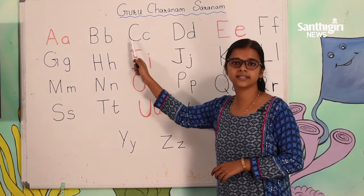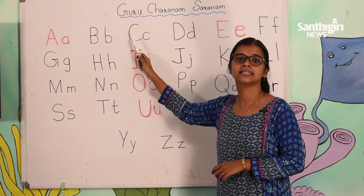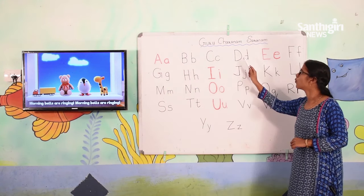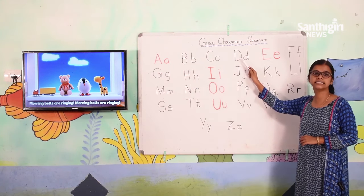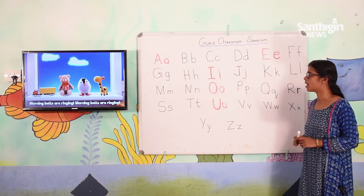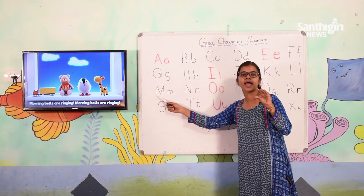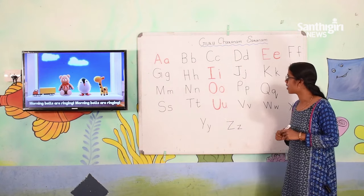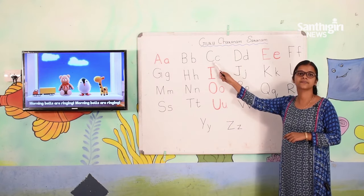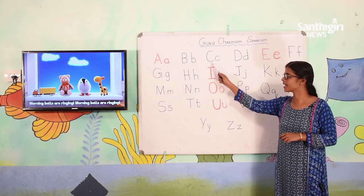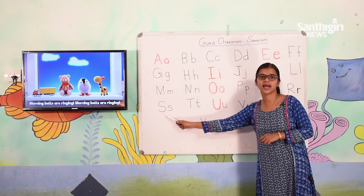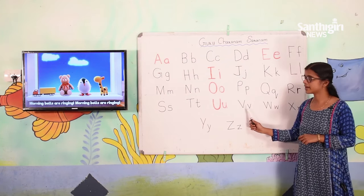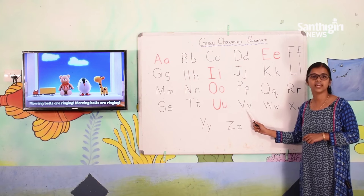So what letter is this? Z. What letter is this? B. What letter is this? D. Now what letter is this? M. And what letter is this? N. Now what letter is this? C. And this is S. Now see, what letter is this? X. What letter is this? B.